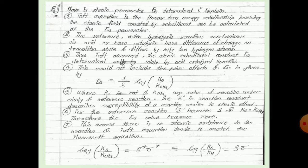A question that comes in the exam: How is the steric parameter ES determined? Explain. The answer: The Taft equation is a linear free energy relationship involving the steric field created by the substituent, calculated as ES parameter. The resonance after hydrolysis reaction mechanism by acid or base catalysis has difference in charge on the transition state, and they differ by only two hydrogen atoms. So Taft assumes the steric constant ES is determined solely by the acid-catalyzed reaction and could not include the polar effect.